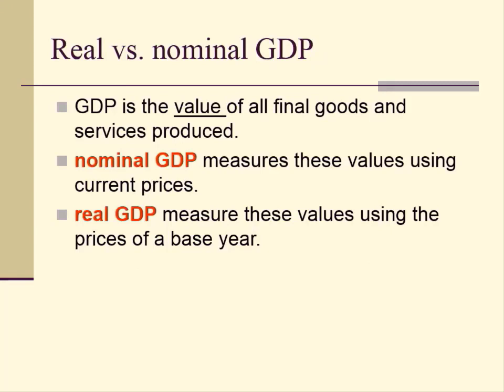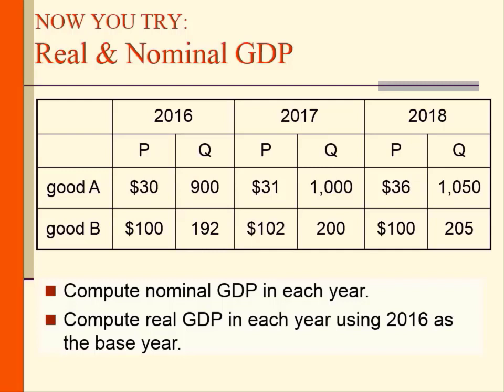GDP is the value of all final goods and services produced. Nominal GDP measures these values using current prices, while real GDP measures these values using the prices of a base year. Now let's solve some problems: compute nominal GDP and real GDP in each year using 2016 as the base year, given prices and quantities of goods A and B for 2016, 2017, and 2018.